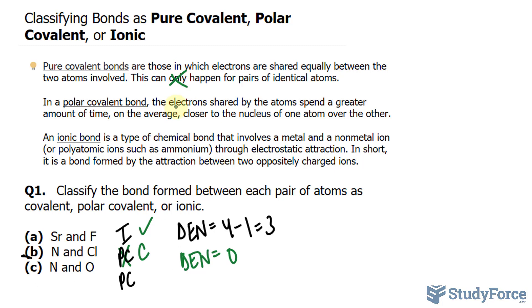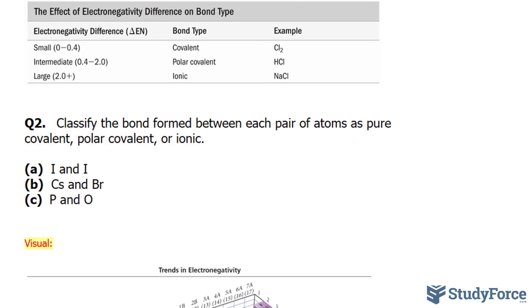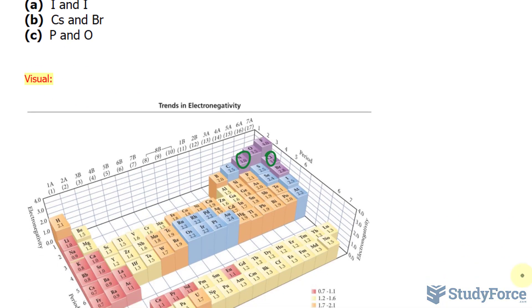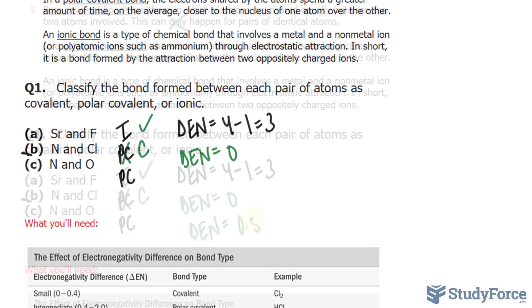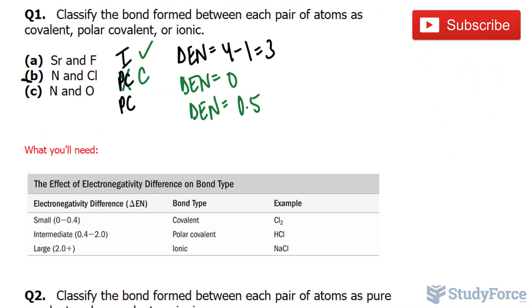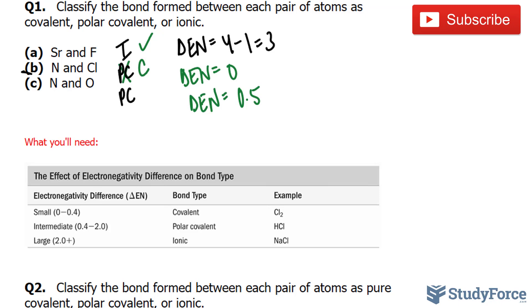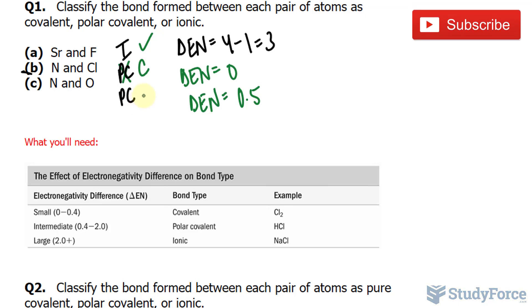Finally, nitrogen and oxygen — both nonmetals. The difference in electronegativity between nitrogen and oxygen is 0.5. According to the chart, this gives us a polar covalent bond. So this was correct.